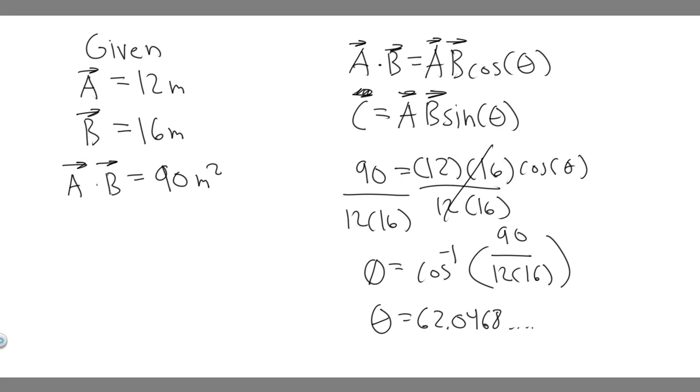So just keep that in mind. And so to solve for C, it's going to be equal to A, vector A, which is 12, times B, which is 16, and then multiply it by the sine of our angle that we just solved for. This.